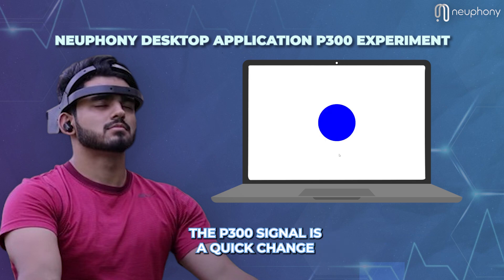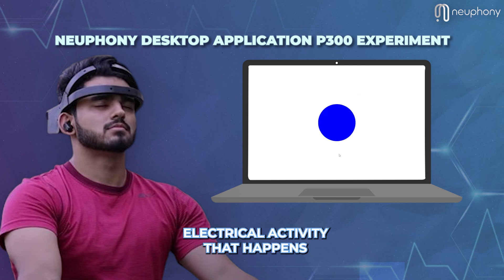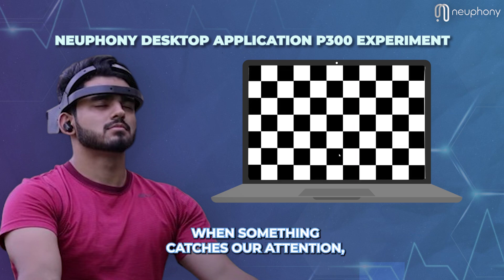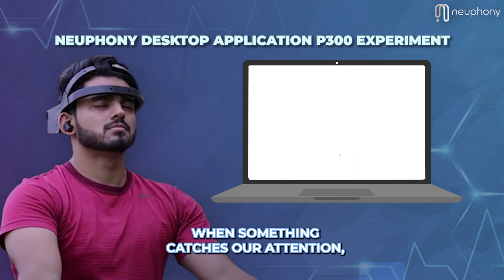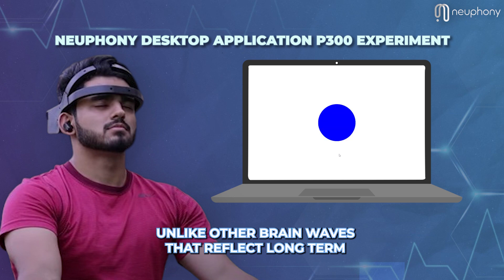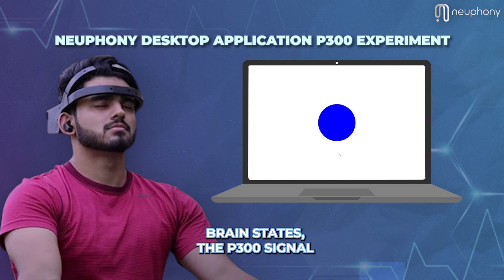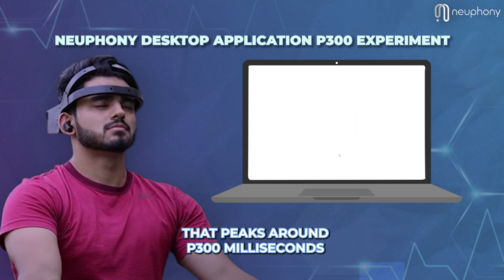The P300 signal is a quick change in the brain's electrical activity that happens when something catches our attention — something we see, think about, or do. Unlike other brainwaves that reflect long-term brain states, the P300 signal is a quick and distinct response that peaks around 300 milliseconds after the stimulus.